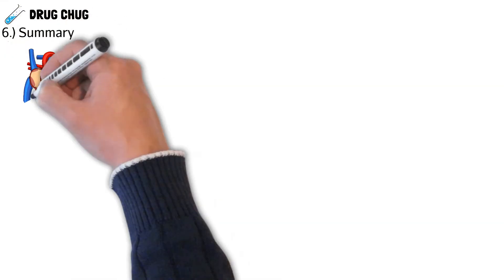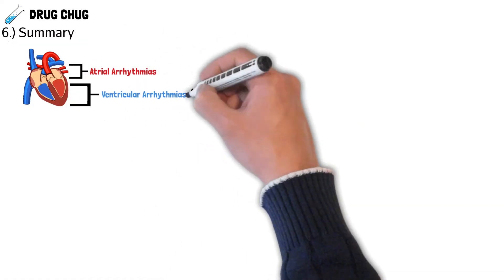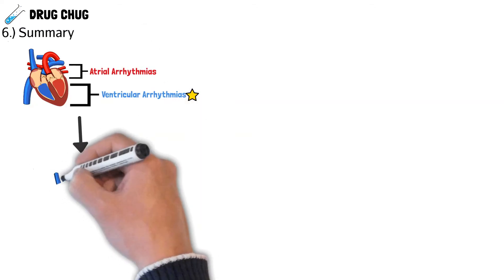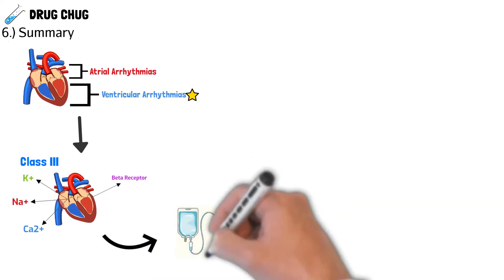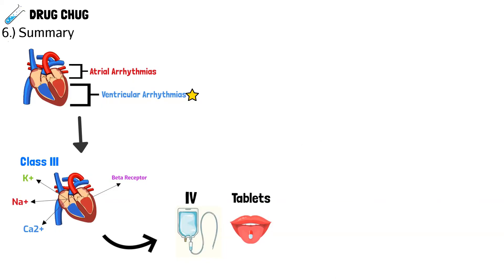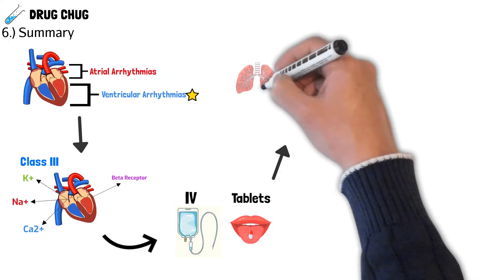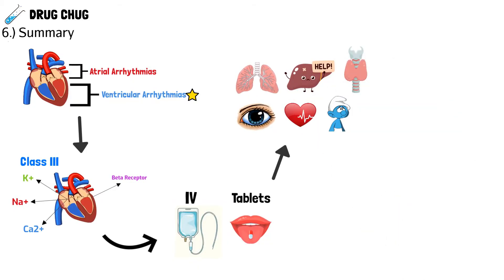Quick summary to recap everything we learned. Amiodarone is used for atrial arrhythmias at the top of the heart, and ventricular arrhythmias at the bottom of the heart, which are a lot more life-threatening. It's a class three antiarrhythmic because it blocks the potassium channel, sodium channel, calcium channel, and beta receptors — so it does everything. It comes in IV and tablet form, and the conversion from tablet to IV is 50%. Side effects include effects on the lungs, liver, and thyroid; it can affect the heart by causing arrhythmias; and there's the unique side effect where the patient turns blue.